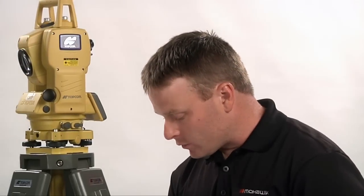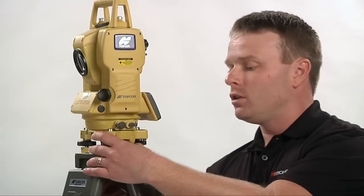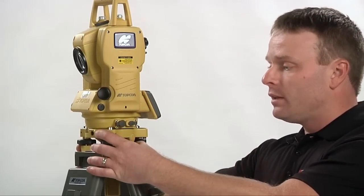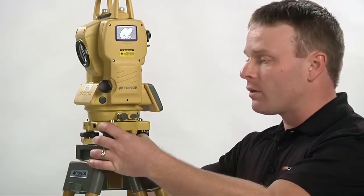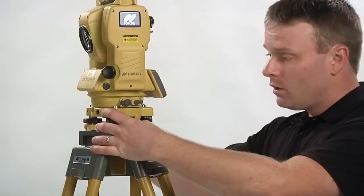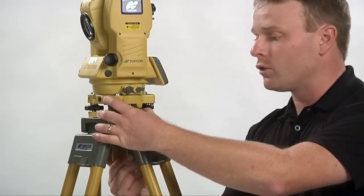Now the total station is level, you must check that the laser plummet is still centered over the point. If not, you must loosen off the bolt on the tripod and move the machine forwards or backwards or side to side without twisting to get the laser plummet over the point. Then secure the bolt once again.